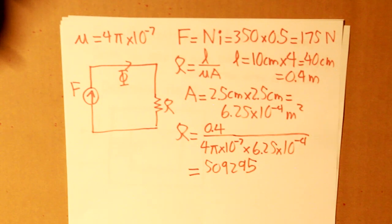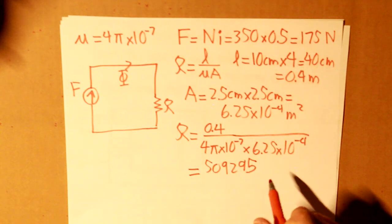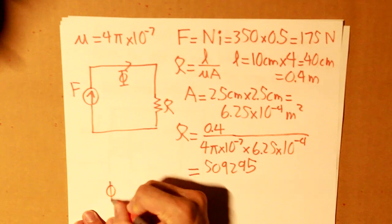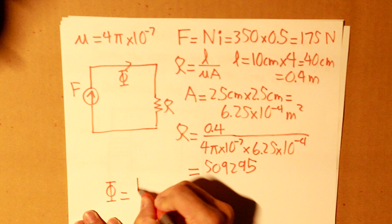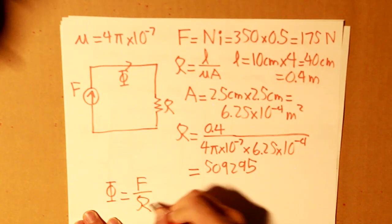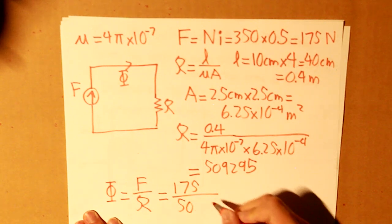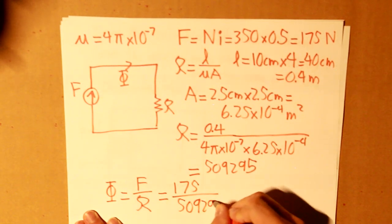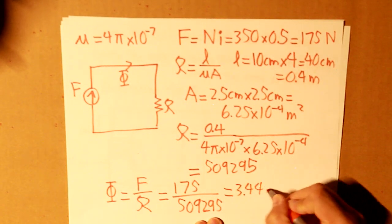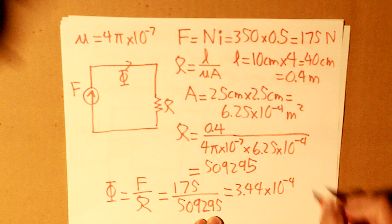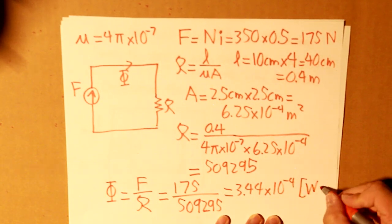And our reluctance value would be 509,295. So, we got our magnetomotive force value and our reluctance value. And all we need to do now is take the flux. And that flux would be equal to F divided by our cursive R. 175 divided by 509,295. And our answer shall be 3.44 times 10 to the negative 4. And our unit of flux would be capital WB.